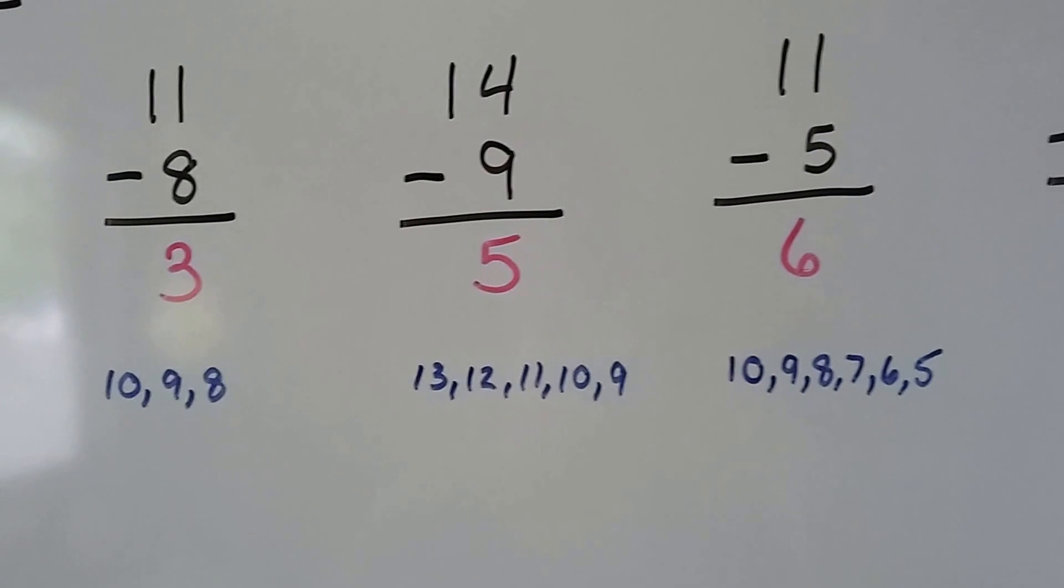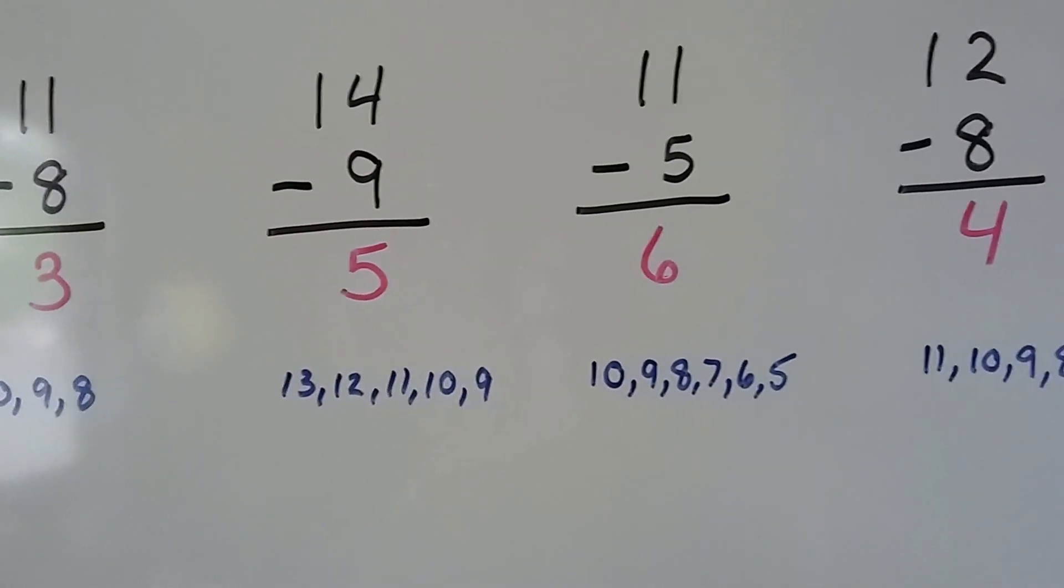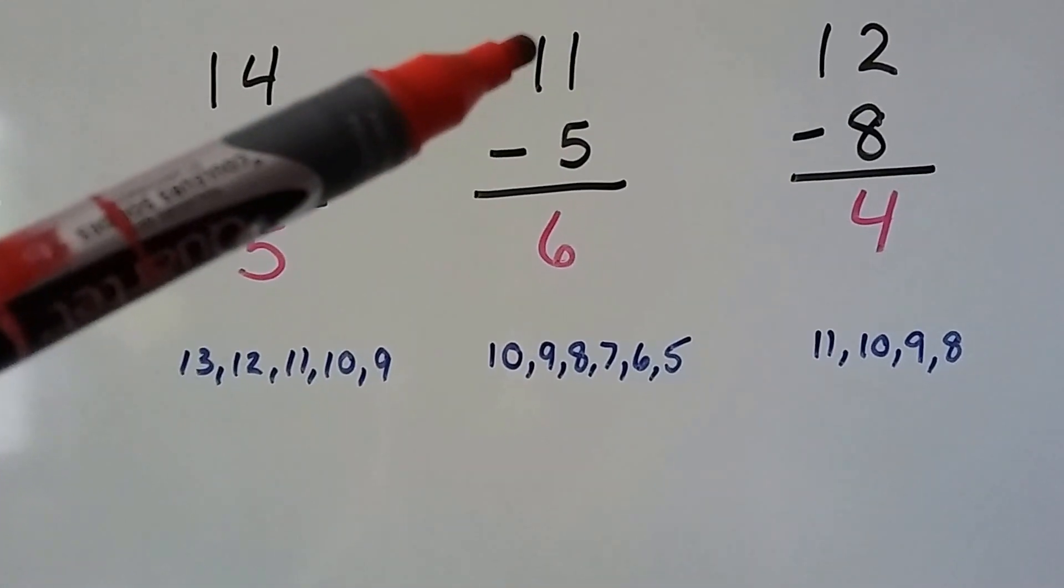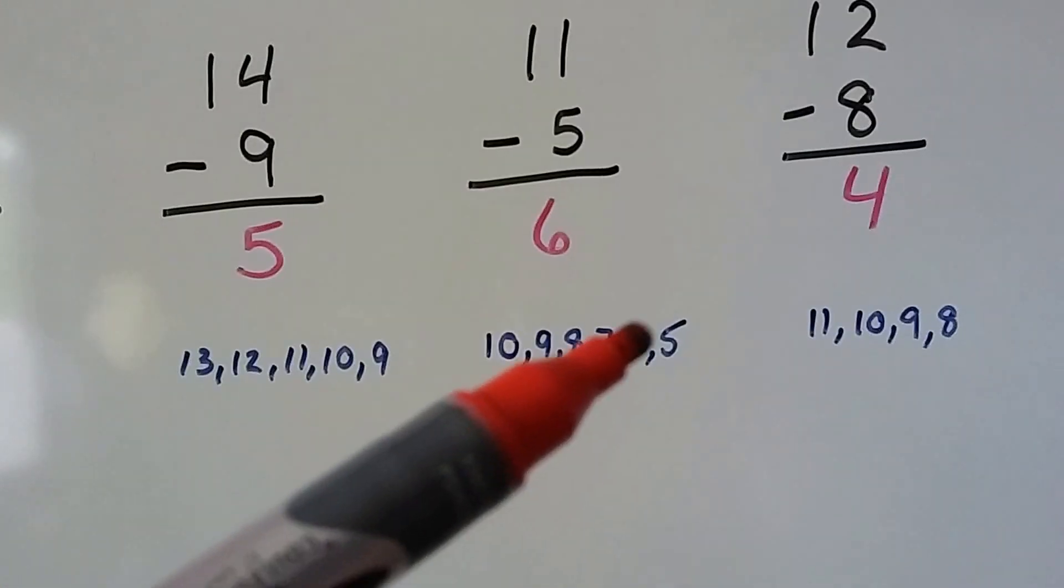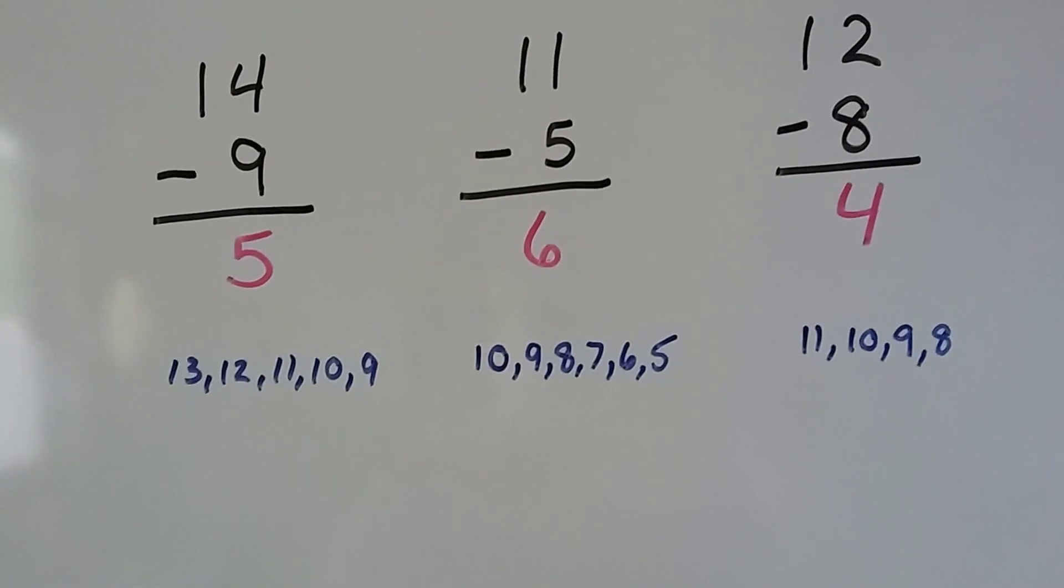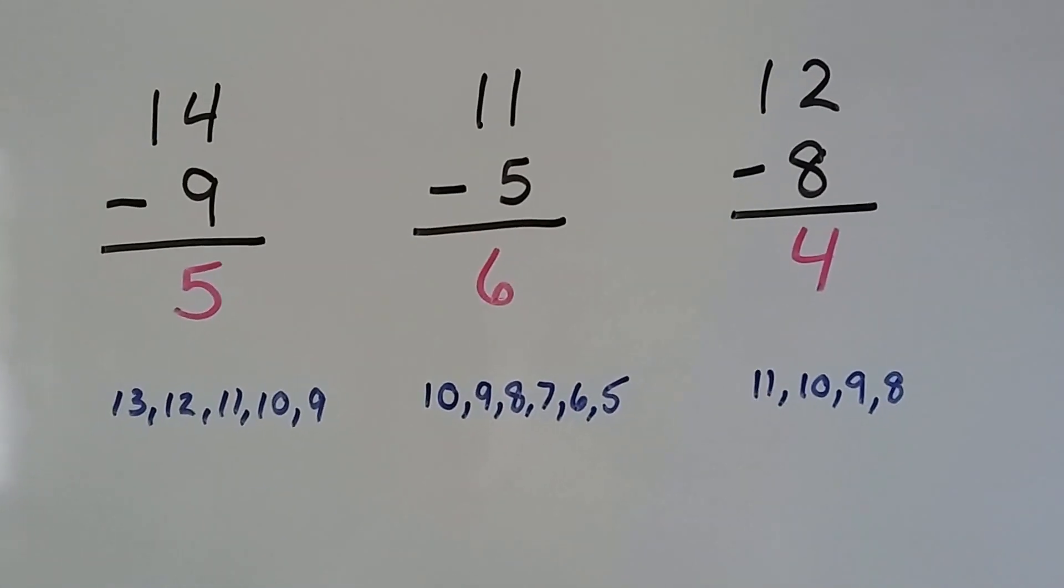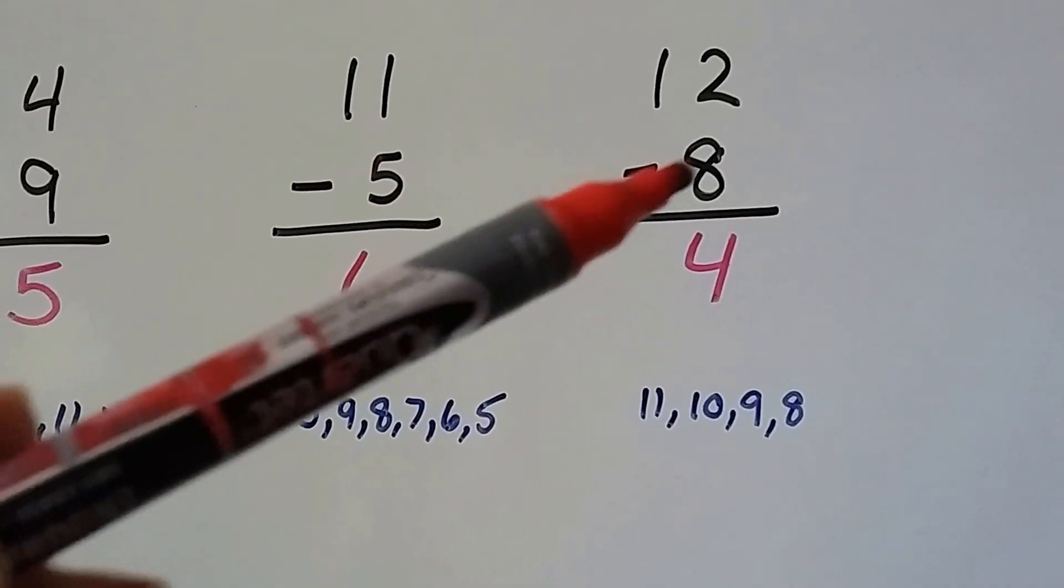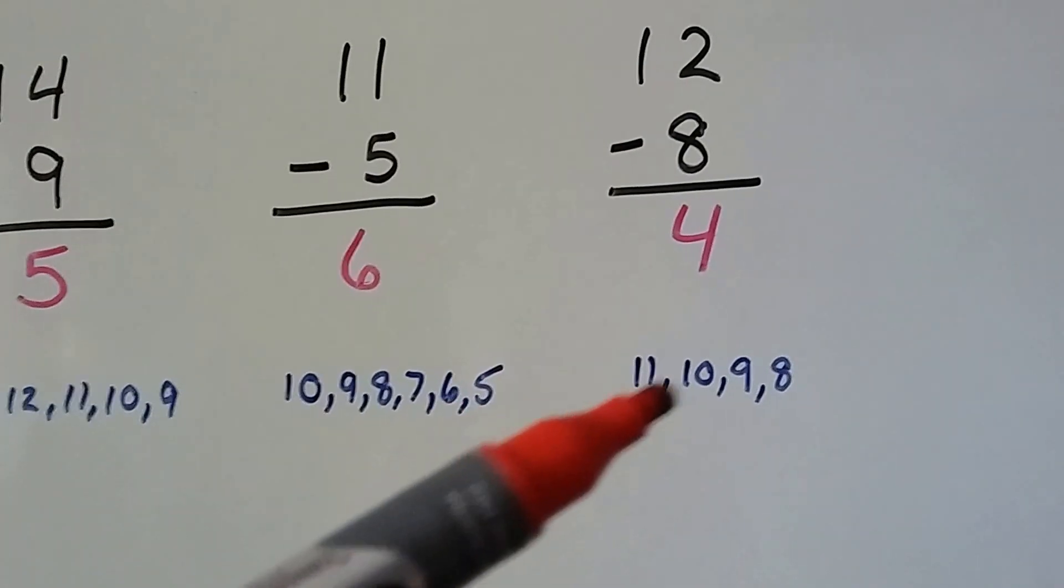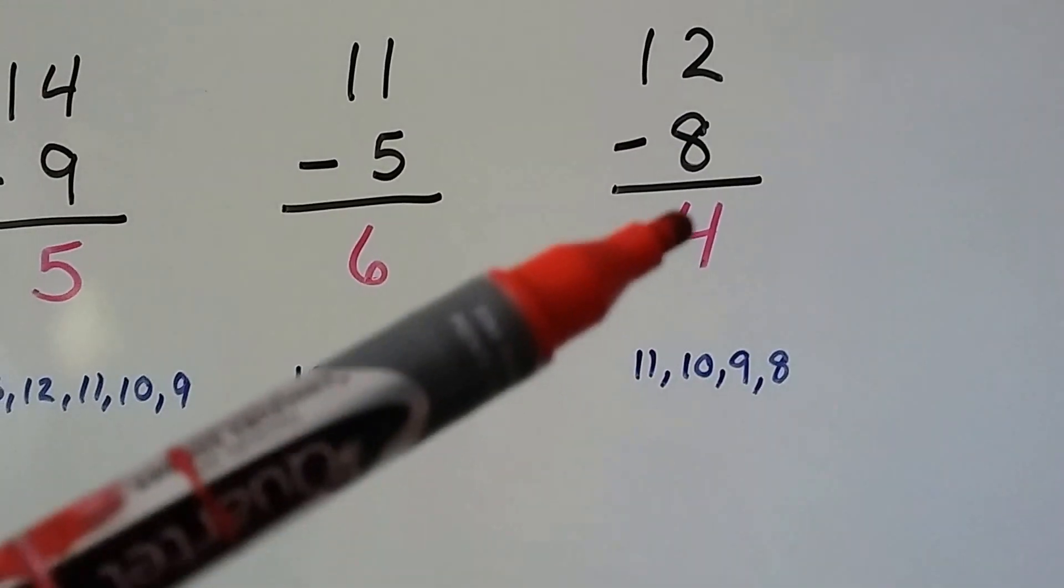11 minus 5, we start at the 11 and count back until we get to the 5: 10, 9, 8, 7, 6, 5. That was six numbers. 11 minus 5 is 6. And 12 minus 8, we start at the 12 and count back until we get to the 8: 11, 10, 9, 8. It was four numbers. 12 minus 8 is 4.